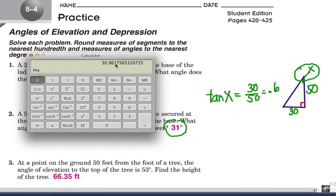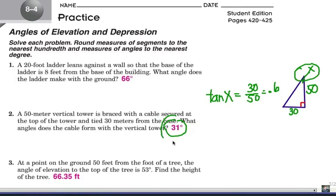And there's our angle, 30.963. Let's go ahead and call that 31 degrees, and there you go. 31 degrees from the cable to the tower. Moving on to number 3.